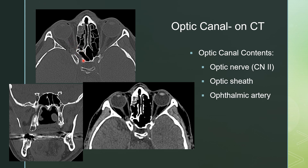Here it is on the right; on the left we're just a little bit out of plane. On the coronal imaging, you're looking for that optic nerve. Here it is again on axial, on soft tissue windows — you're looking for that optic nerve going through the optic canal towards the optic chiasm.